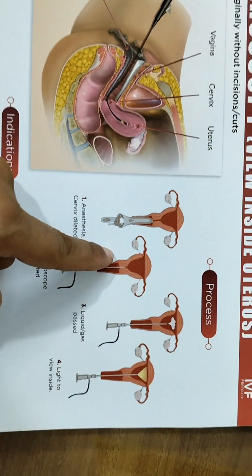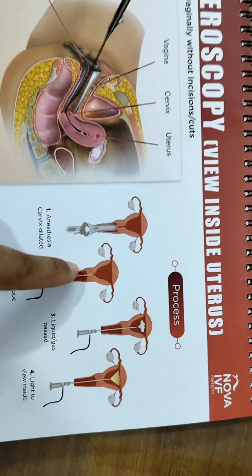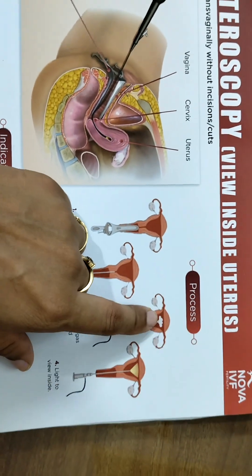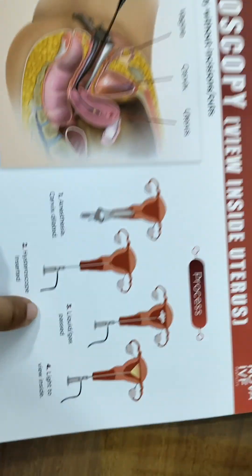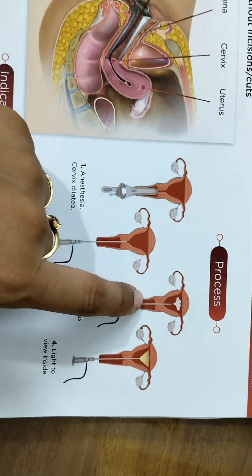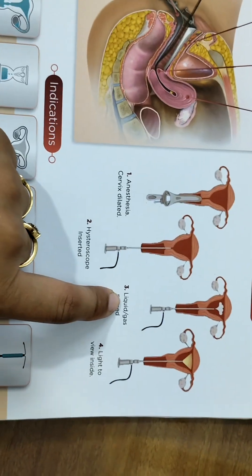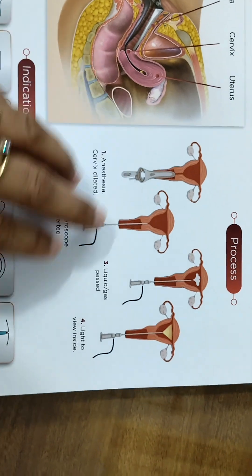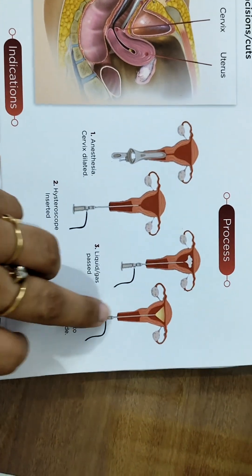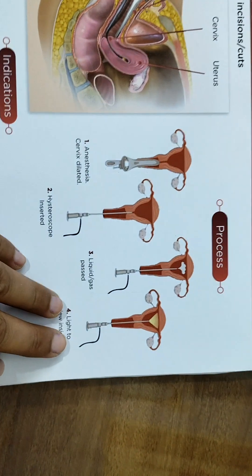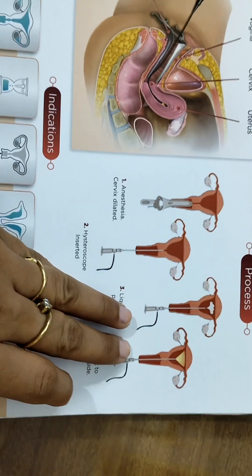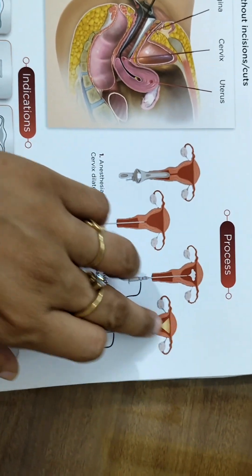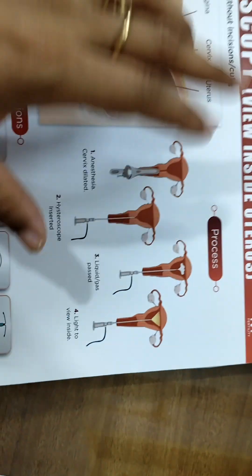Then, gradually, we insert the hysteroscope. The uterus is a cavity and normally the cavity is always collapsed, so the third step is to distend the cavity. Most of the time we use normal saline, and the pressure is kept almost always less than 100 mm of mercury. Finally, a light cable and a camera are attached, so we can have a look inside the uterus on a TV screen.